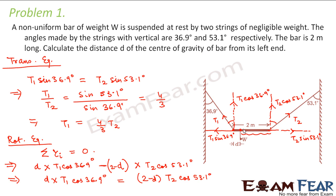The key concept here is that the center of gravity is the point where the object is in equilibrium — both translational and rotational. Translational equilibrium means total force equals zero; rotational equilibrium means total torque equals zero. The torque is calculated from each end about the center of gravity, and the net horizontal force condition is also applied. Using these two conditions together allows us to solve such problems.